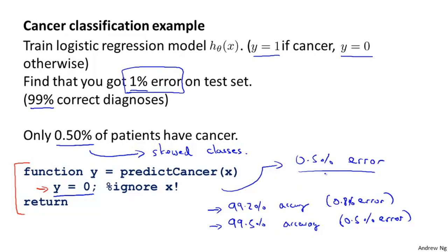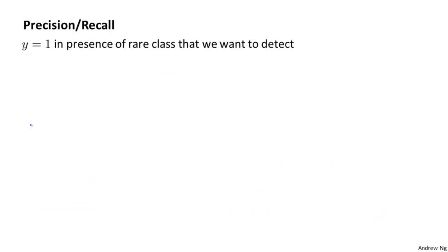Predicting y equals 0 all the time doesn't seem like a particularly good classifier, but just predicting y equals 0 more often can bring your error down to maybe as low as 0.5%. When faced with such skewed classes, we'd want to come up with a different evaluation metric. One such evaluation metric is what's called precision and recall.